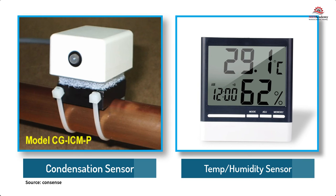Dew point transmitters are used to sense space dew point levels to avoid condensation in rooms where chilled beams are installed. Since chilled beams are designed to avoid condensation and are installed without condensate drain piping, avoiding condensation is critical. Moisture sensors can be strapped to the chilled water piping to indicate the presence of moisture, allowing a signal to be sent to the control valve to stop the flow of chilled water to the chilled beam as a precautionary measure.